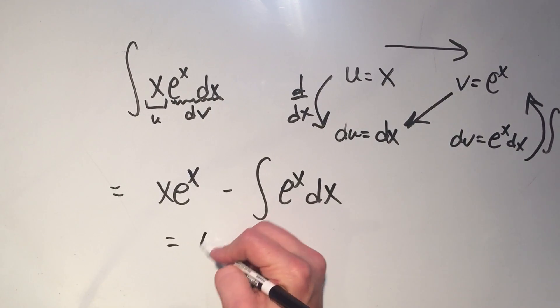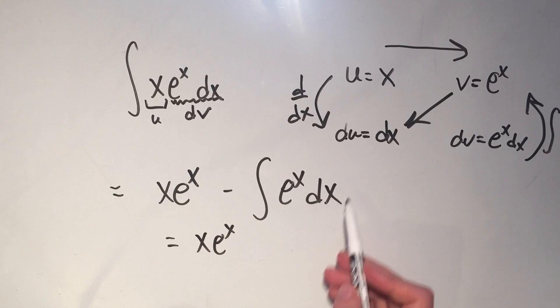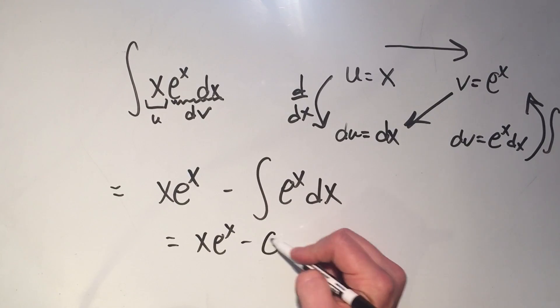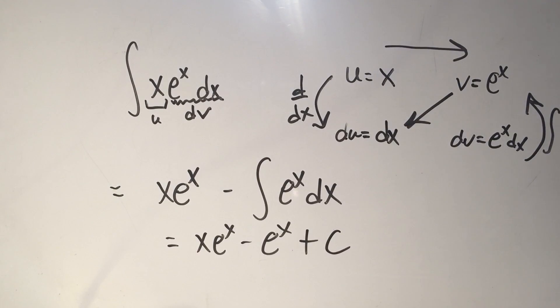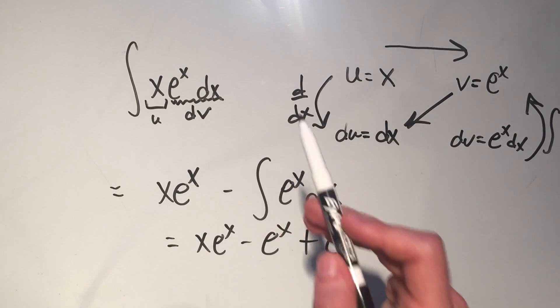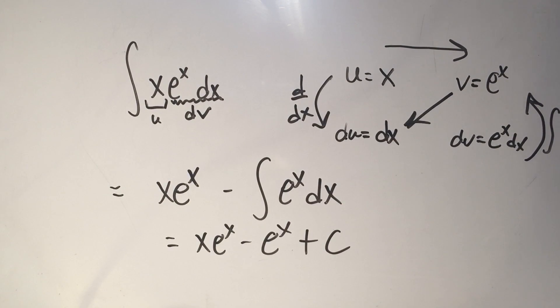And I just have one more simple anti-derivative to do. The anti-derivative of e to the x is e to the x. And since this is an indefinite integral, I need to add plus C. So there you go, the integral of x times e to the x is x times e to the x minus e to the x plus C.